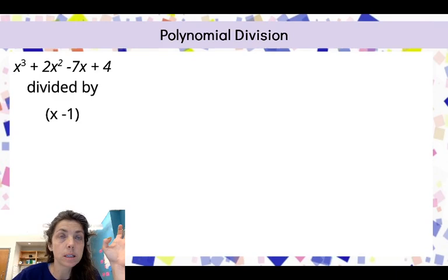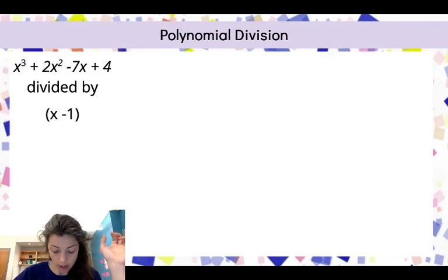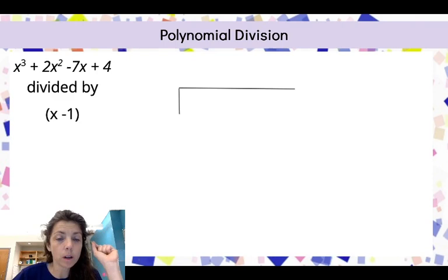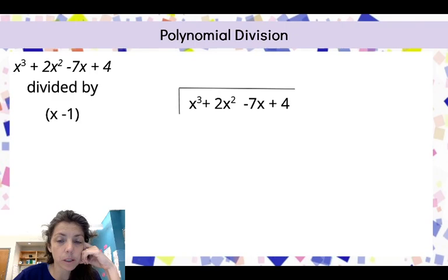We want to see if x - 1 is a factor, and if so, what is the factor pair that we can multiply to get this polynomial that we're starting with. First thing I've got to do is set up my division problem. I'm going to put x³ + 2x² - 7x + 4, and on the outside, put my factor, x - 1.